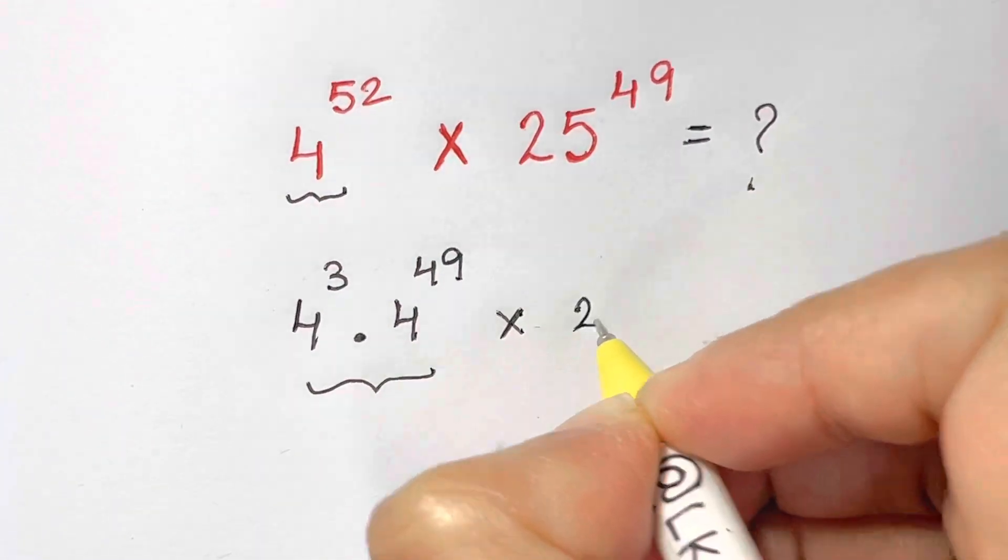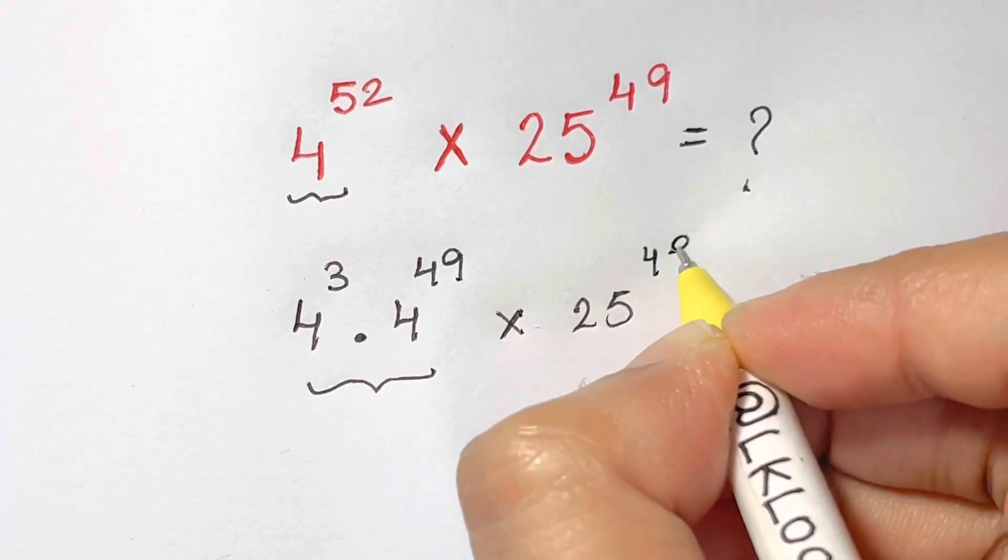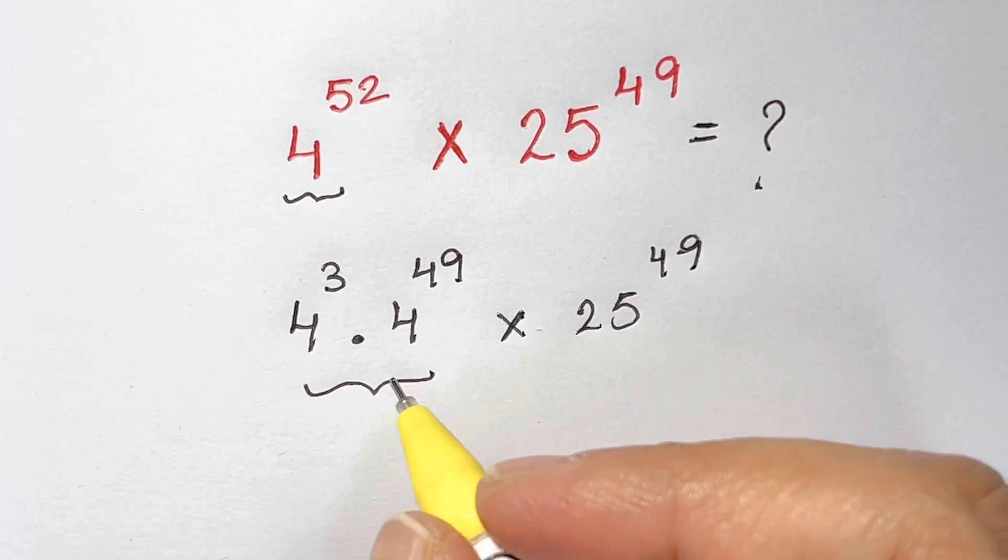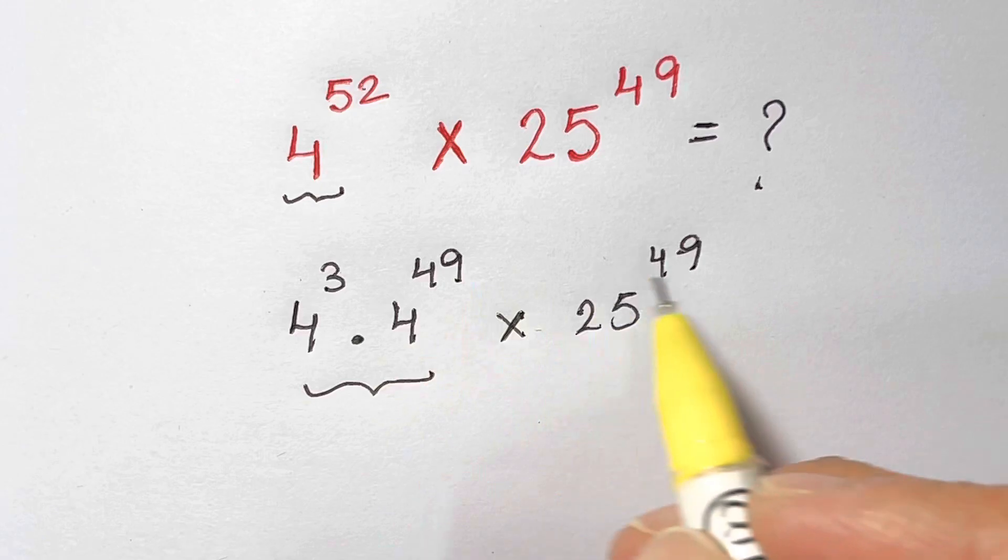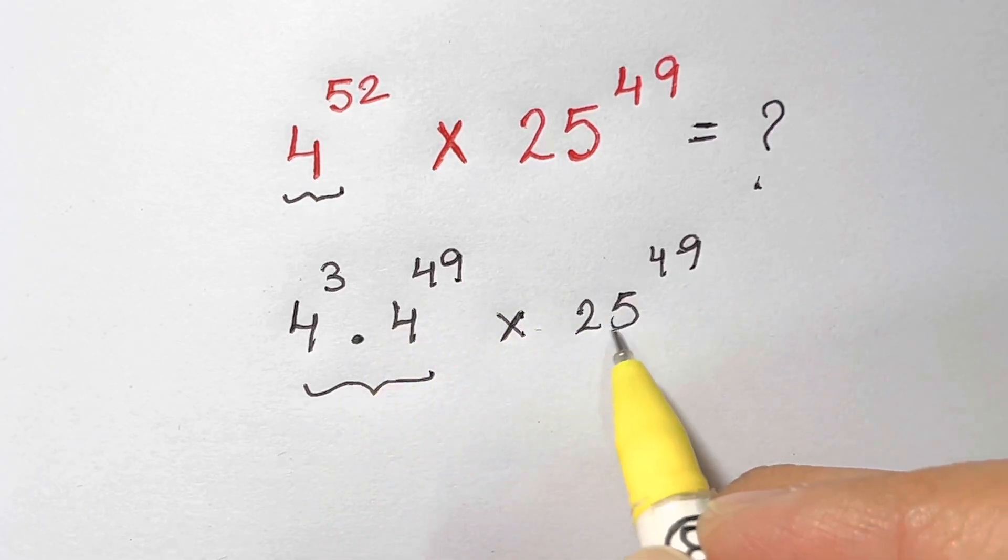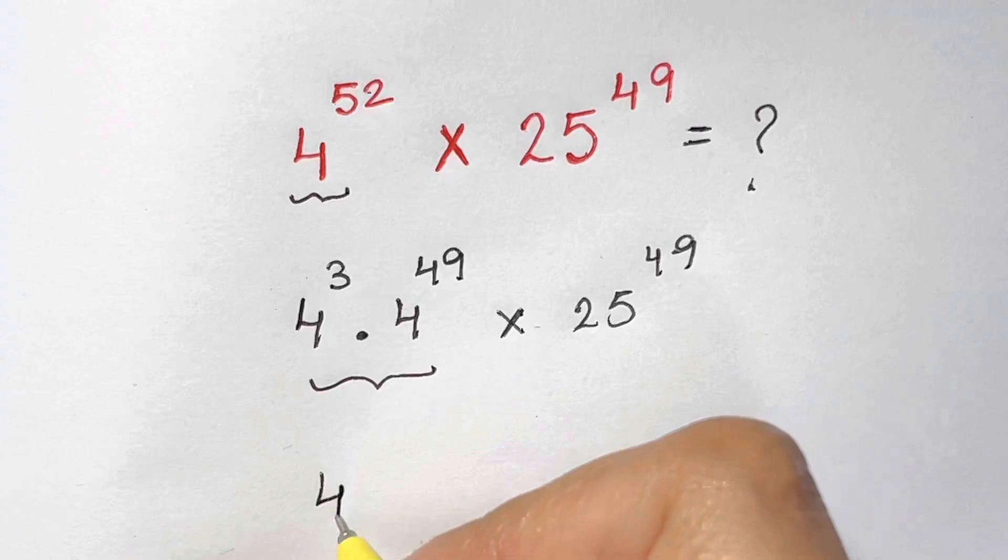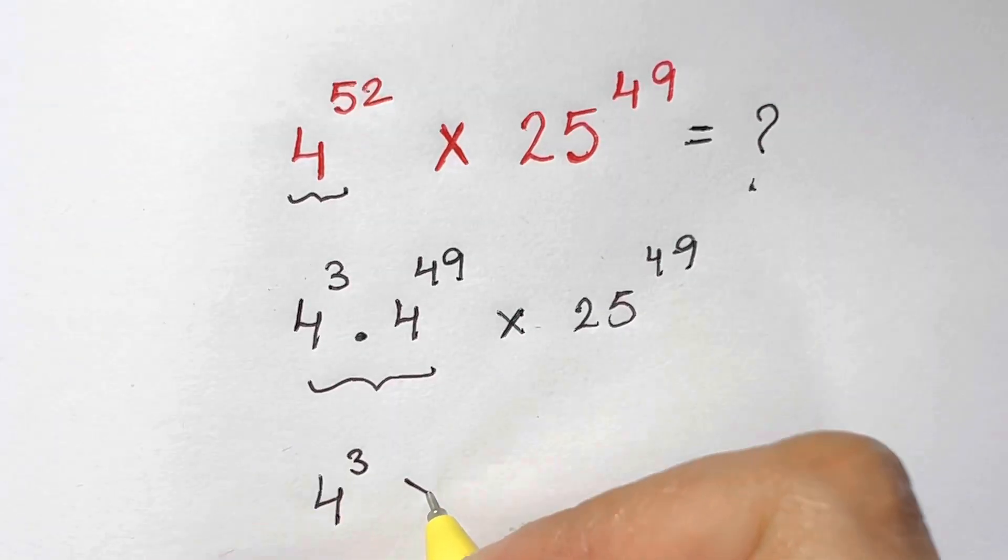Now as I can see here, you have 49 here, you have 49. You've got the same exponents. I can clap them, so I'll have 4 cubed then what I'm going to do is times you have this 4 to the power of 49 times 25 to the power of 49.